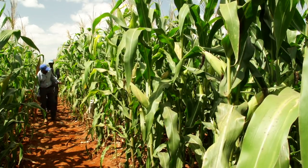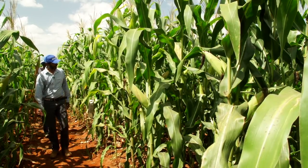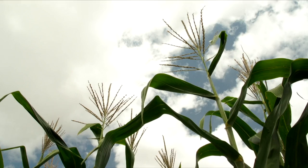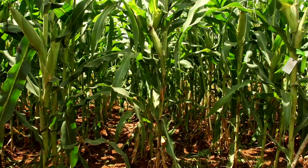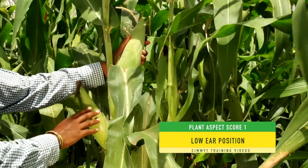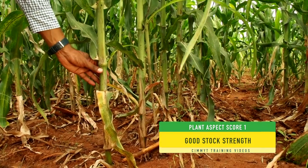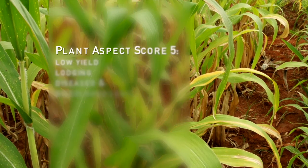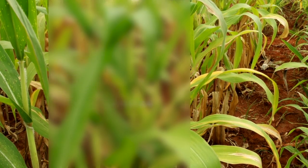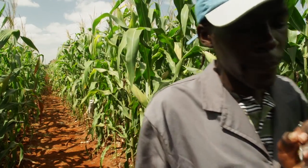Plant aspect is a composite visual score given by breeders to rate the overall plant performance of a variety. It incorporates key traits such as ear position, plant architecture, tassel characteristics, and disease prevalence. Plant aspect is scored on a 1 to 5 scale, where 1 represents excellent plant type with yield potential, uniformity, low ear position, vigorous growth, and good stalk strength, and 5 represents a poor plant type with low yield, lodging, diseased and discolored leaves, and poor tassel exertion. Plant aspect is typically scored six weeks post-flowering, prior to the onset of crop senescence.